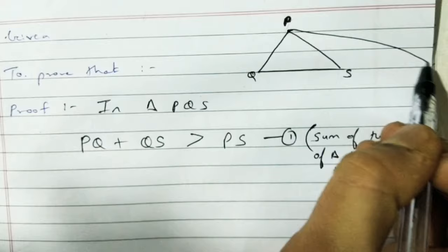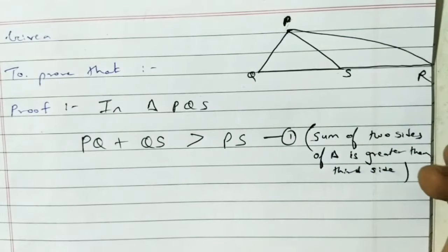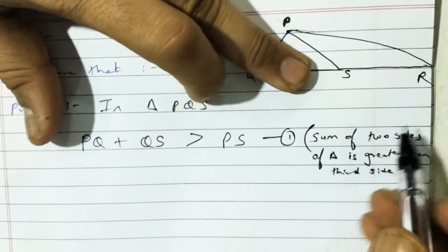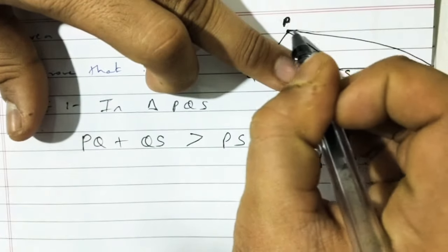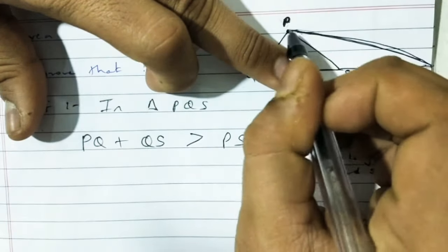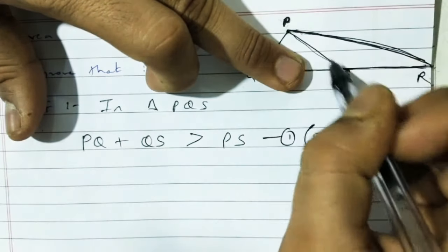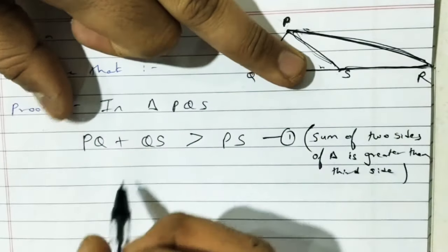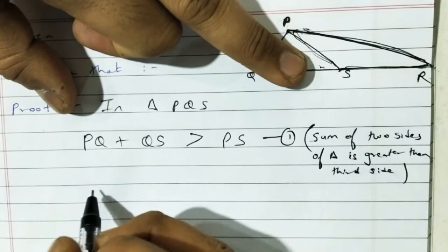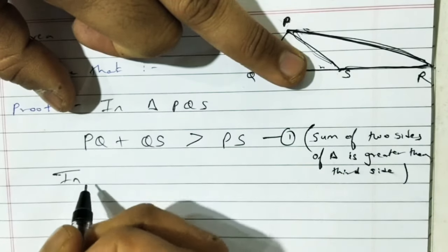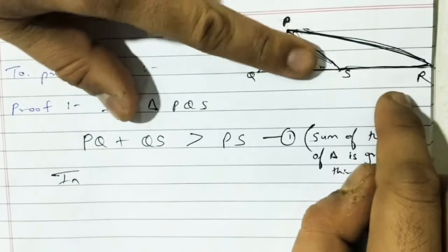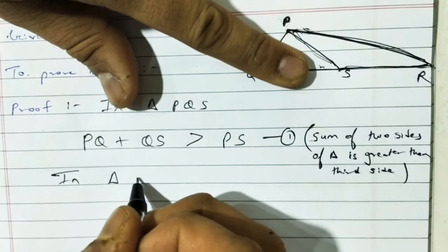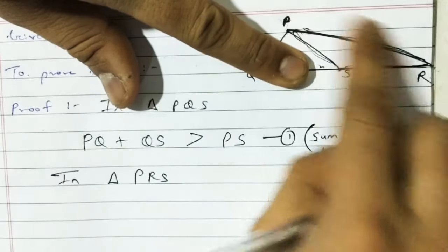Now the second triangle connected to this is triangle PRS. Using the same property for triangle PRS as well. Let's write the triangle name — which triangle are we taking? Look, I've placed my finger on this triangle.